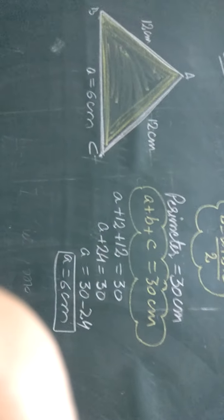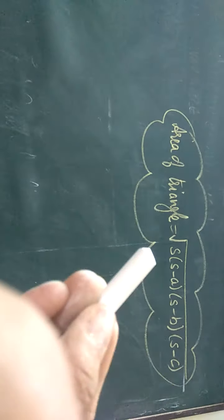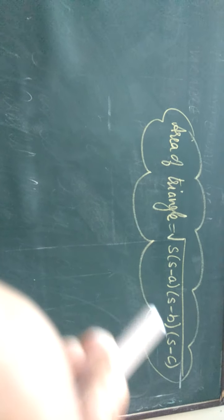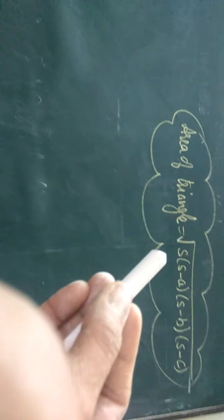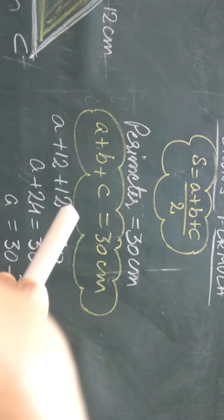Now we have to find out the area. As we all know, to find out the area of a triangle we need S, A, B, C. We have all three sides A, B, C. S is semi-perimeter. We have to find out semi-perimeter. For that we have two methods.